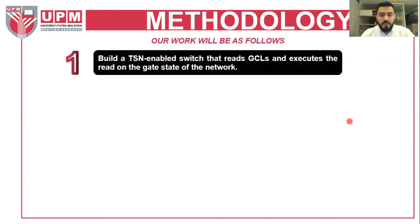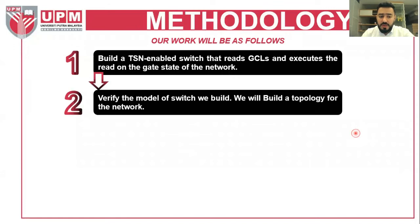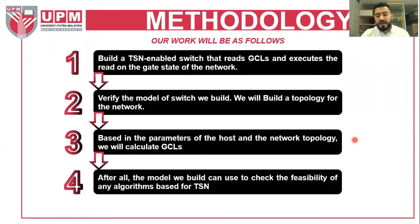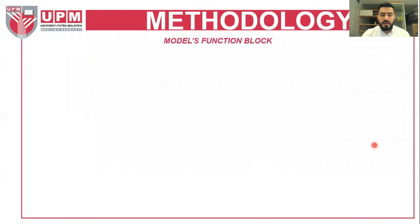Going to our methodology, our work is as follows. We will build a TSN-enabled switch that reads the gate control list and executes operations on the gate state of the network. Then we verify the switch model and build a network topology. Based on the host parameters and network topology, we calculate the gate control list. Afterward, the model can be used to check the viability of any TSN-based algorithm. Our model's function blocks are two parts: the read-file gate control list function, and the transmission model function.